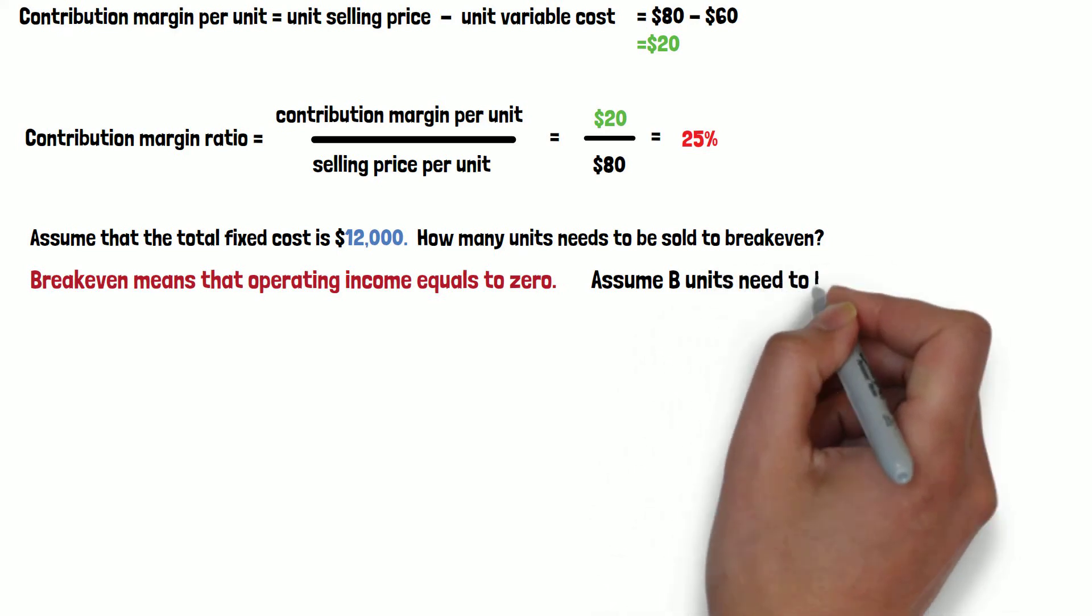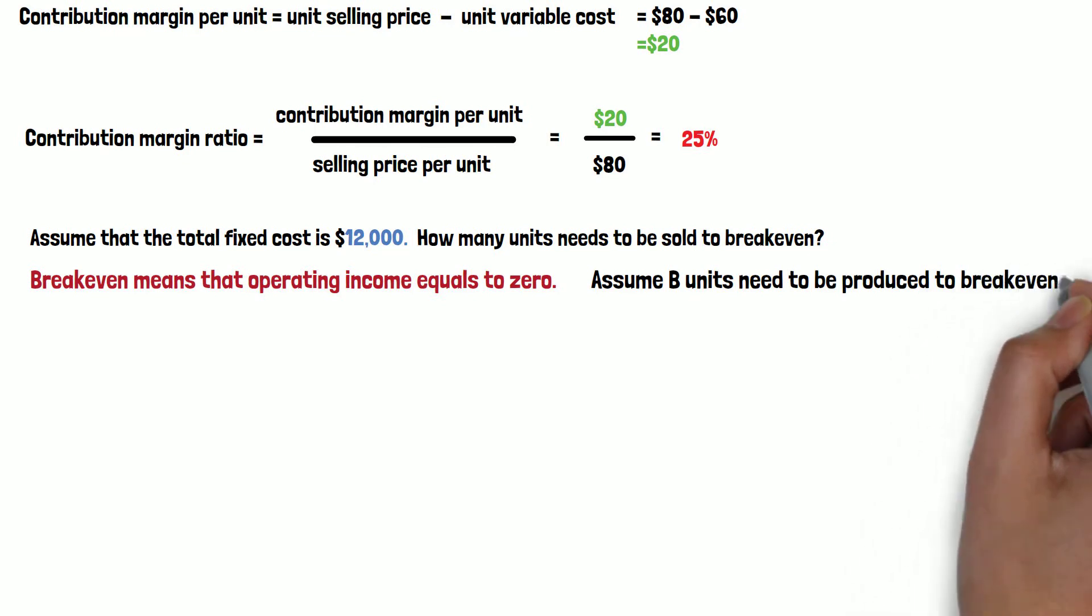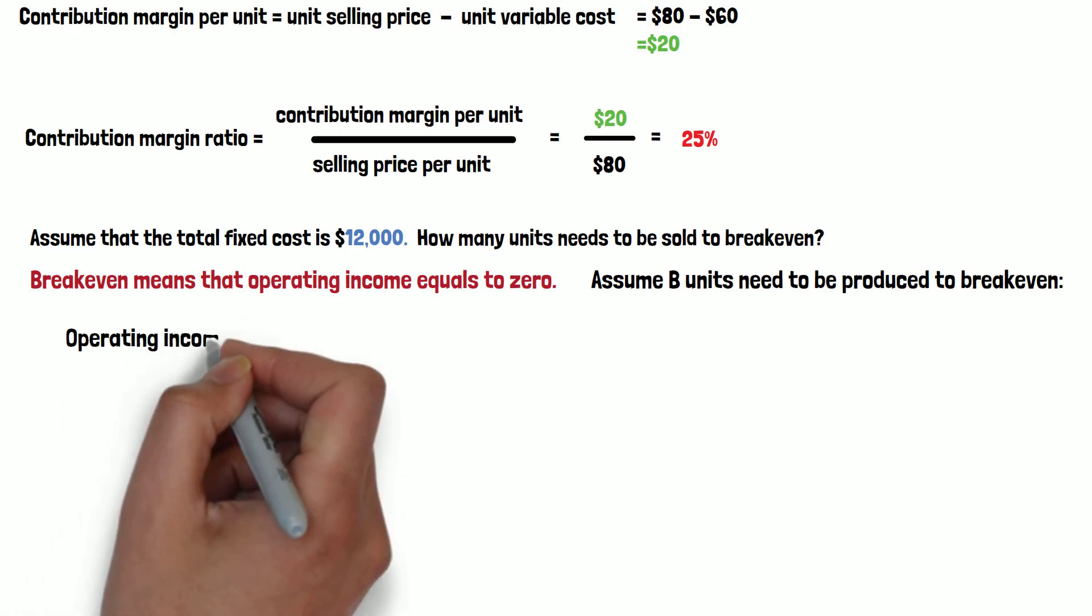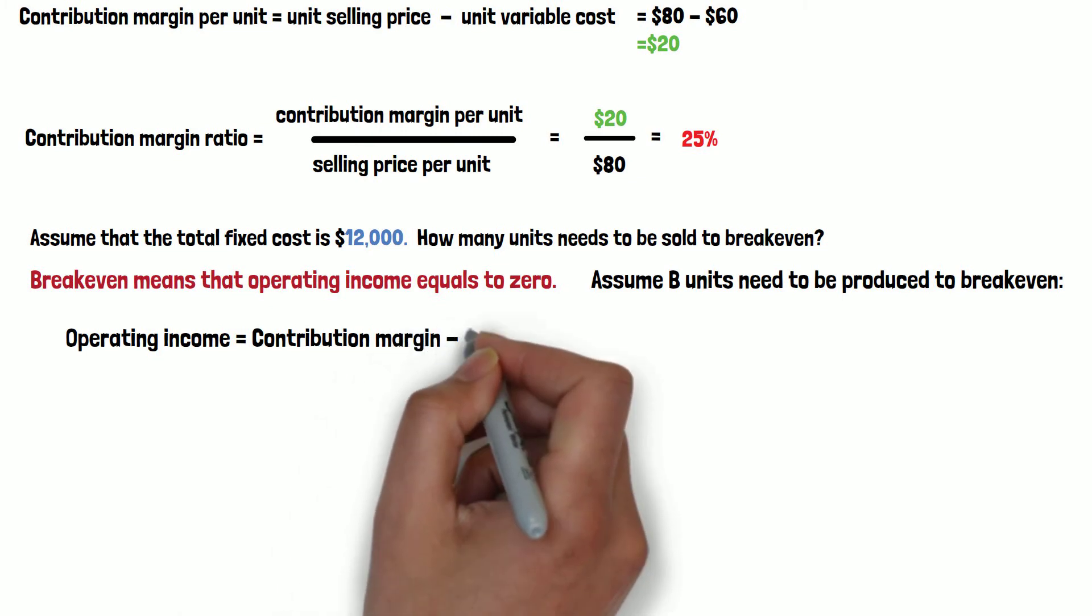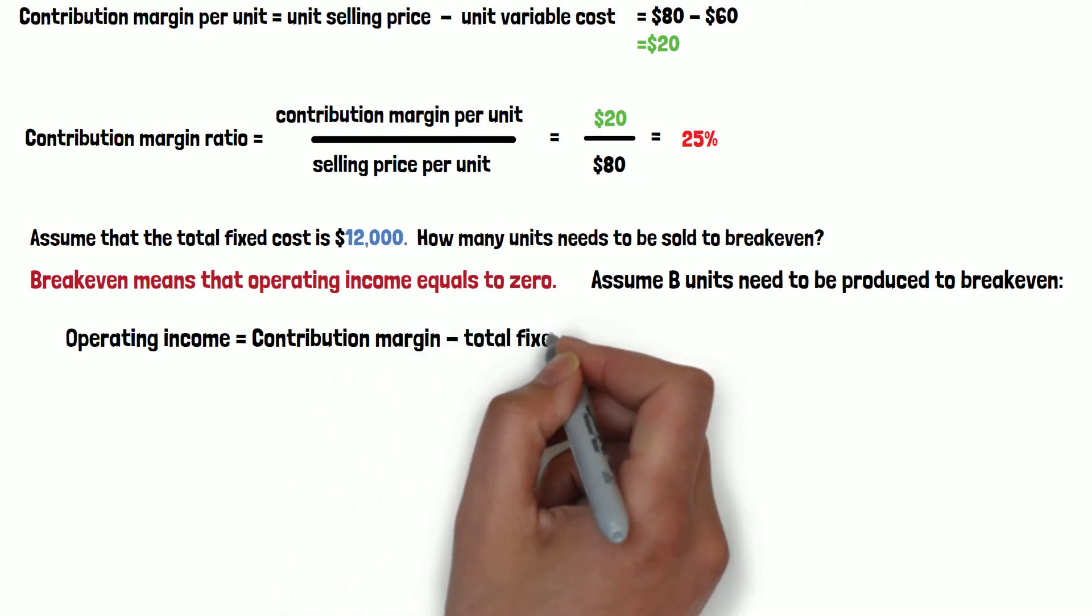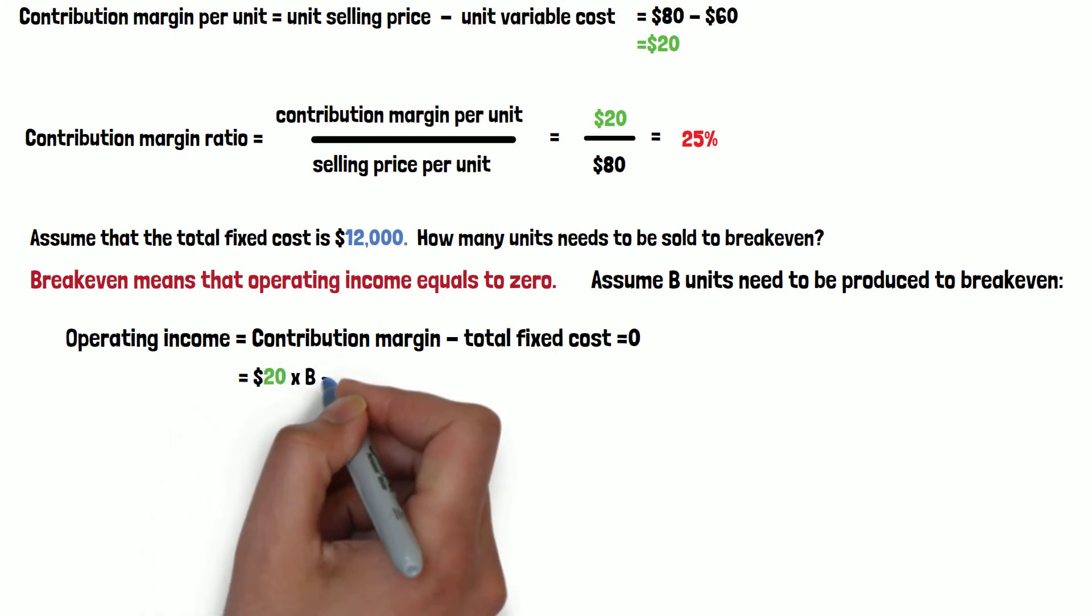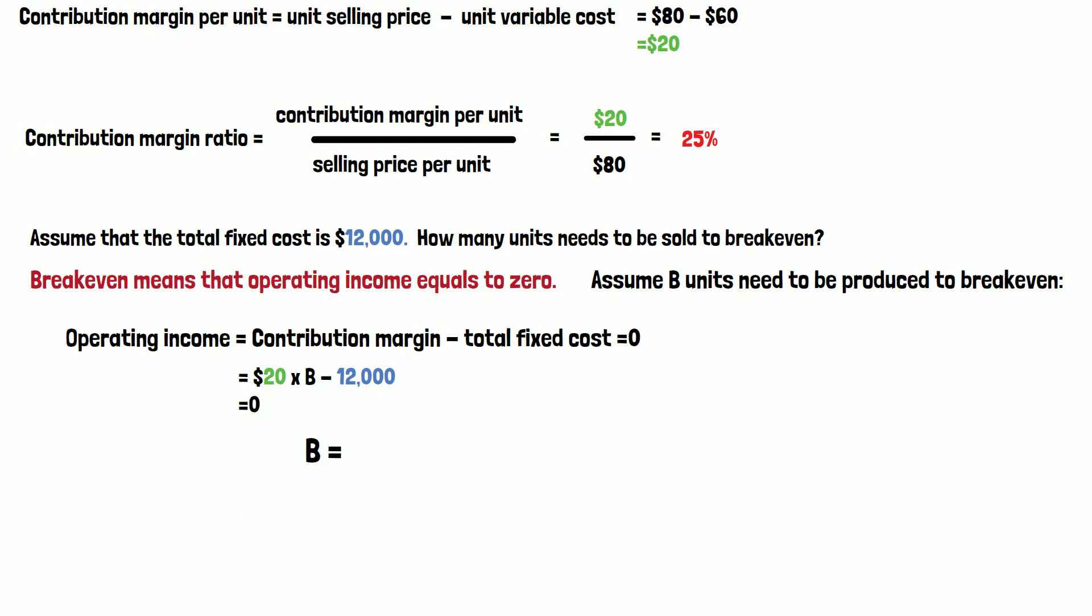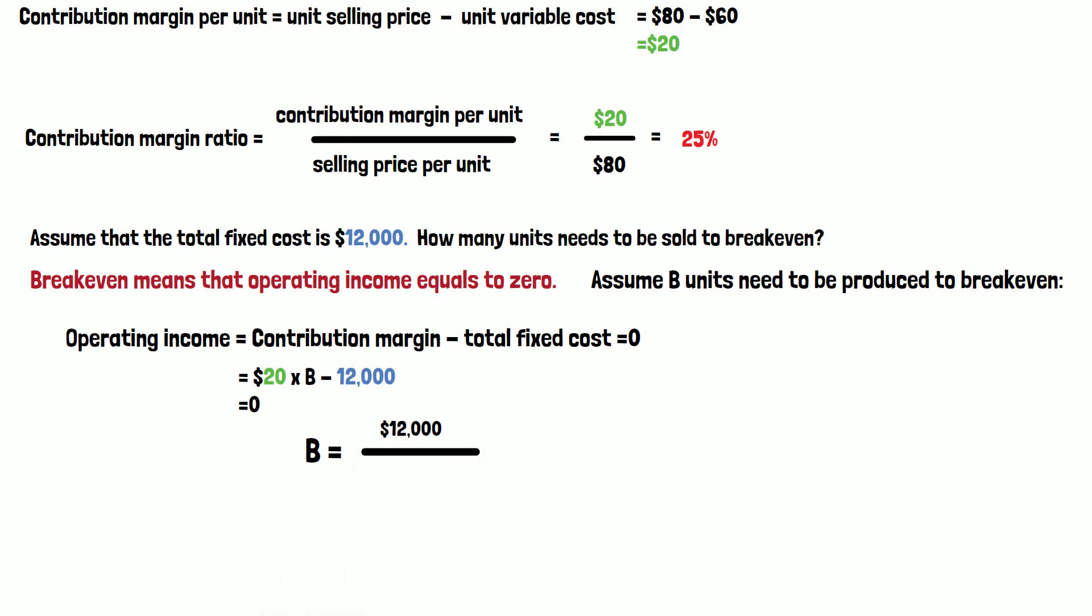So let's assume that we need to sell B units in order to break-even. The operating income equals the difference between contribution margin and the total fixed cost, and that needs to be zero in order to calculate the break-even point. So the contribution margin per unit is $20. The number of units is B. So total contribution margin is $20 times B minus total fixed cost, $12,000. That equals zero.